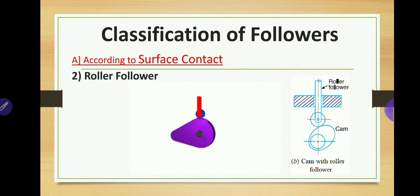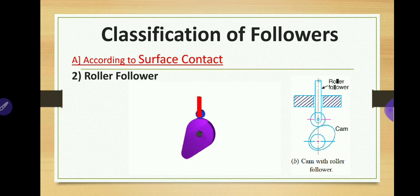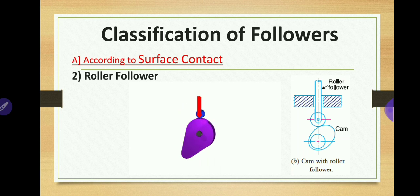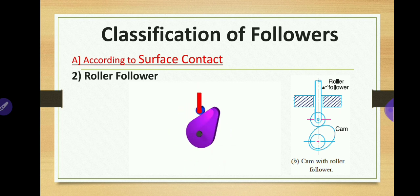The second type is the roller follower. Unlike the knife edge follower which has sliding contact, in the roller follower there is a rolling motion between the follower and cam. When the contacting end of the follower is a roller, it is called a roller follower. Because there is rolling motion, the rate of wear is generally less. However, a side thrust still exists between the follower and guide. Roller followers are extensively used where more space is available, such as in stationary gas or oil engines and aircraft engines.